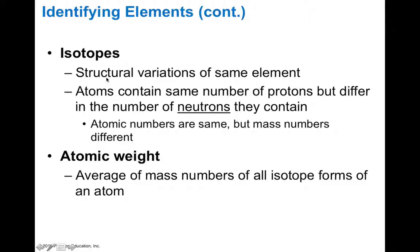Isotopes have structural variations of the same element. These atoms contain the same number of protons, but can differ in their neutron number. So their atomic numbers are the same, but the mass numbers can be different. An example of this is heavy hydrogen. It's possible to have hydrogen with a neutron. So instead of having a hydrogen atom with an atomic mass of one, you can have heavy hydrogen with an atomic mass of two. That would be an isotope, which is a variant of the more common form of that atom. Atomic weight is the average mass of all isotopic forms of that particular atom. If you take their average, that would give you their atomic weight on the periodic table.